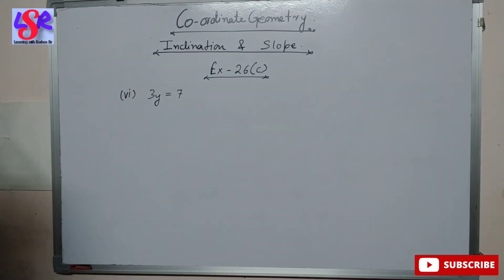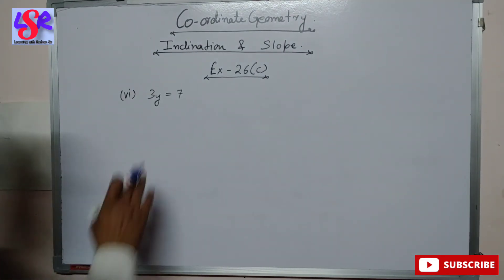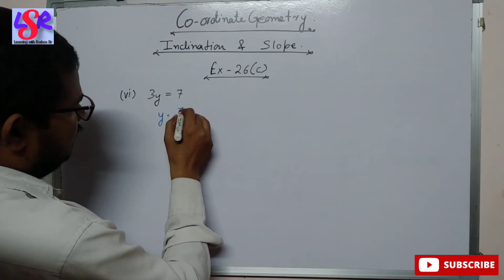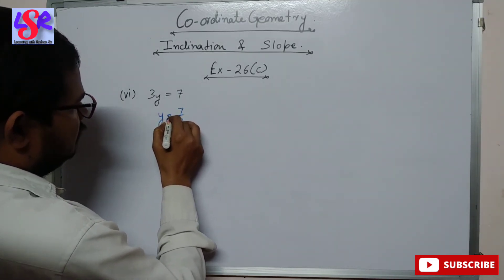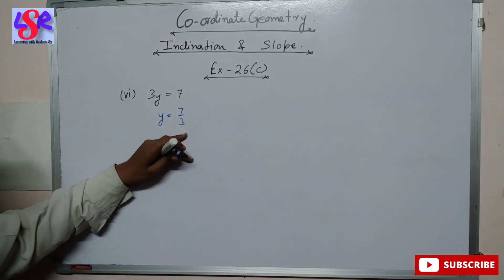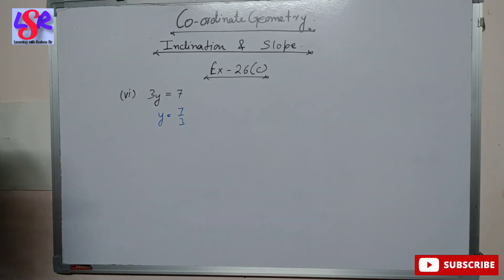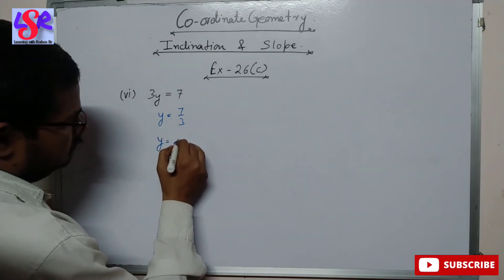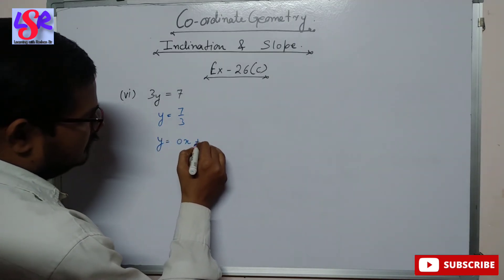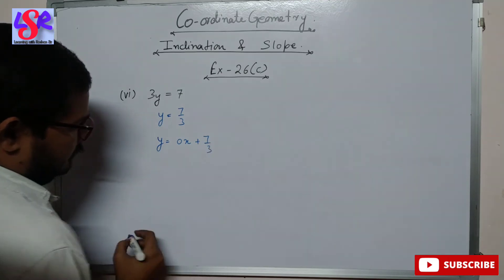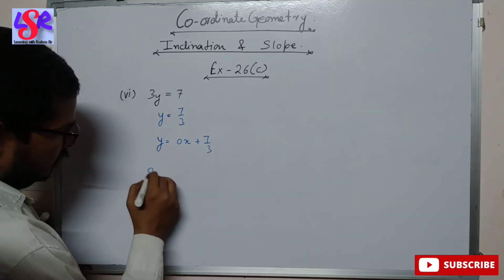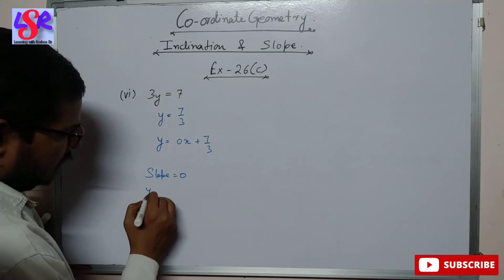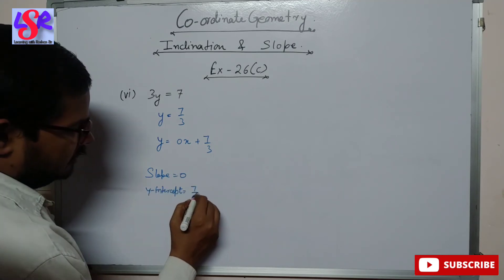Now let's see the sixth part. Here we are having 3y equals 7, so y can be written as 7 upon 3. Here we see this means the slope is 0. We can also write this as 0 times x plus 7 upon 3. So slope of the line equals 0 and y-intercept is 7 upon 3.